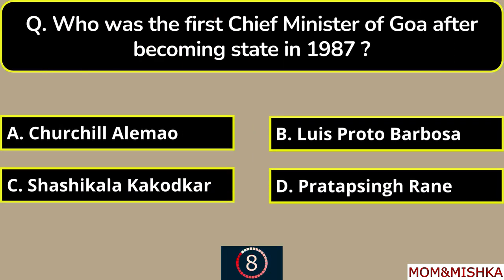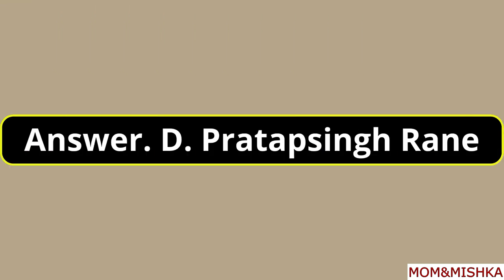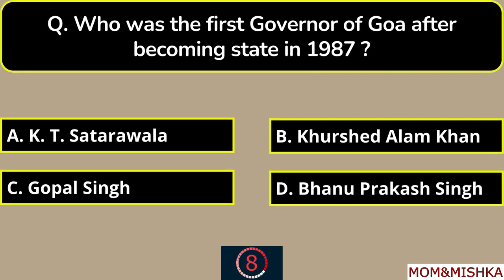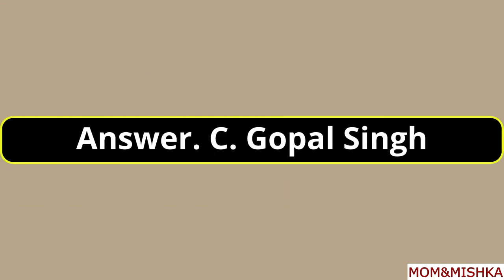Who was the first chief minister of Goa after becoming a state in 1987? Pratap Singh Rane, option D. Who was the first governor of Goa after becoming a state in 1987? Gopal Singh, option C.